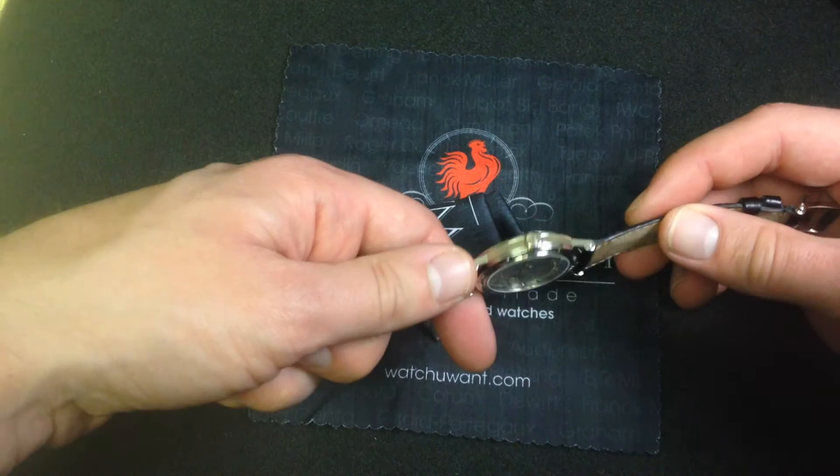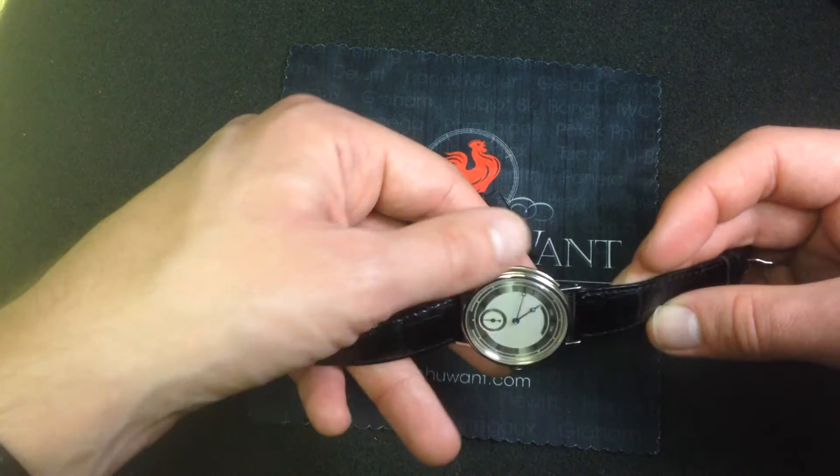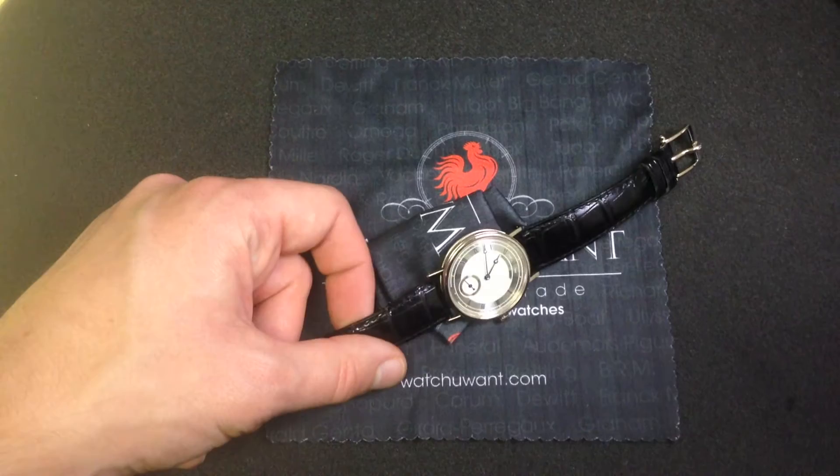This watch features all the signature Breguet elements, from the soldered lugs to the screwed-in retaining pins to the guilloche main 18-karat yellow gold dial, the 18-karat white gold coined case, and of course, that beautiful caliber 511DR. It's available from watchyouwant.com with all original Breguet factory accessories.